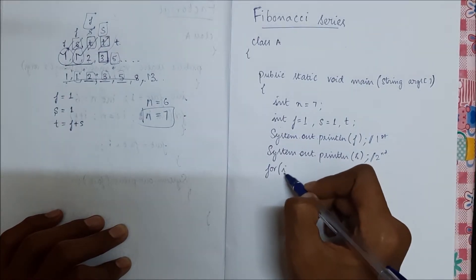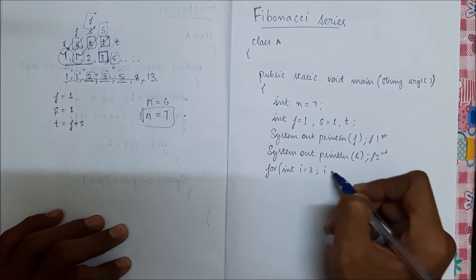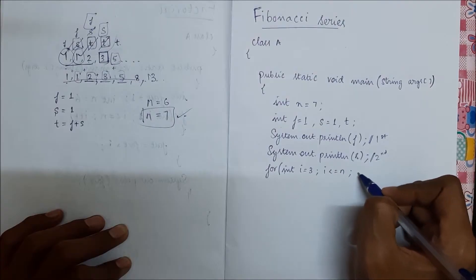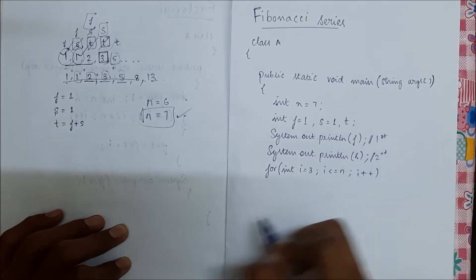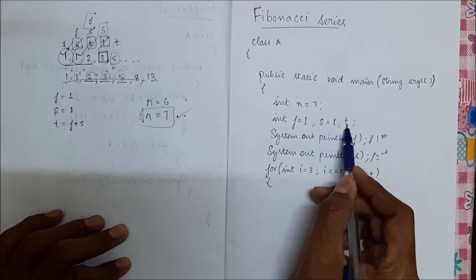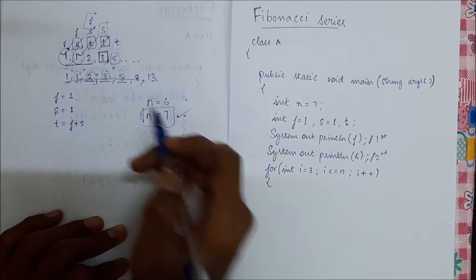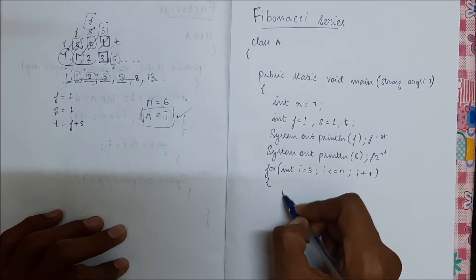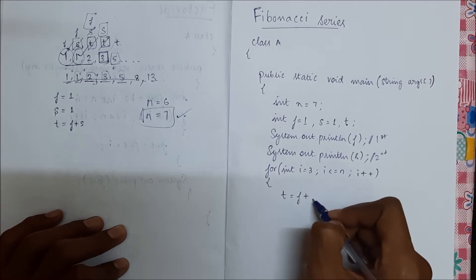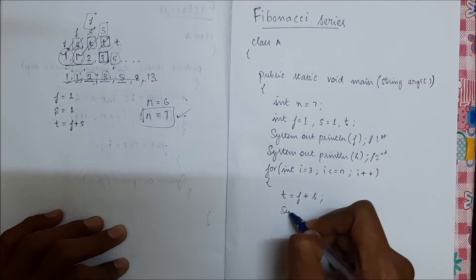Since we've printed the first and second terms, we start the loop at int i equal to three, going up to n, with i plus plus. Inside the loop, we find the third term: t equals f plus s, which is first term plus second term. Now we print t using System.out.println.